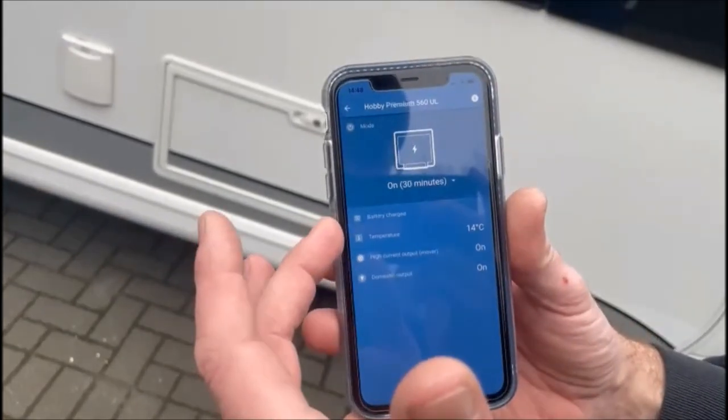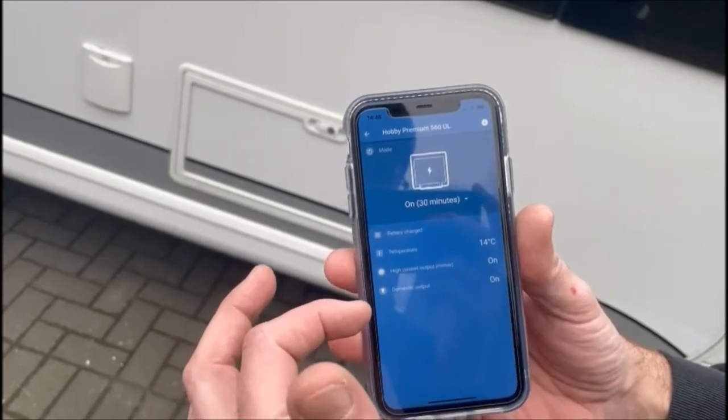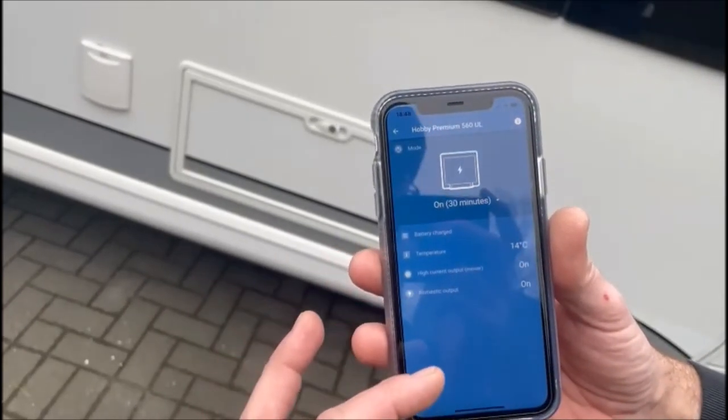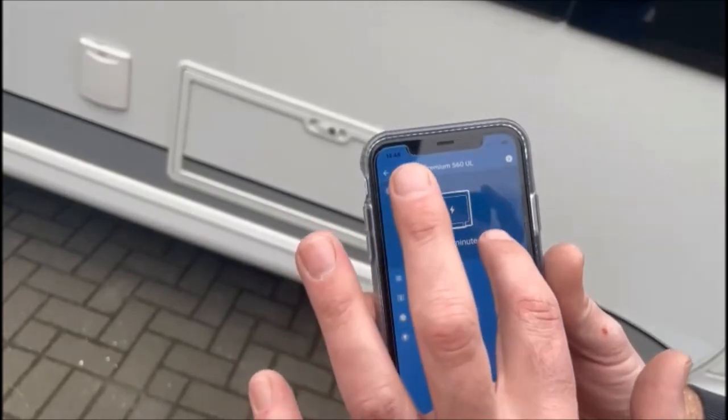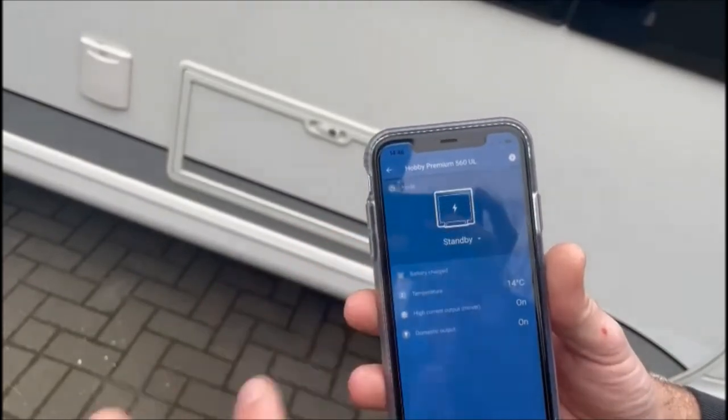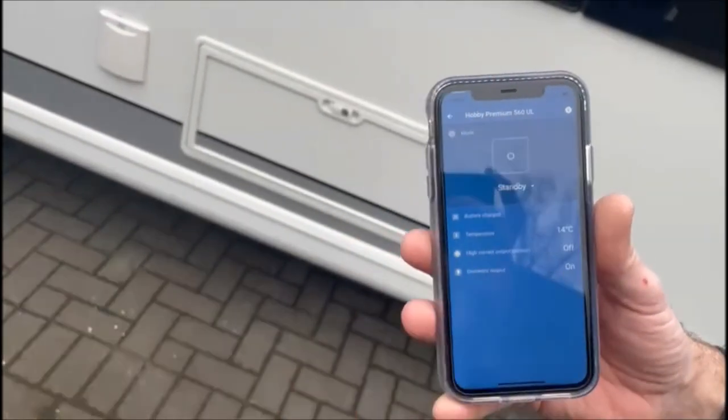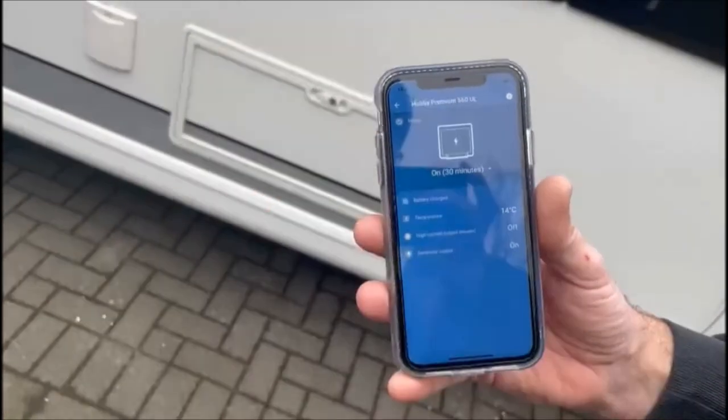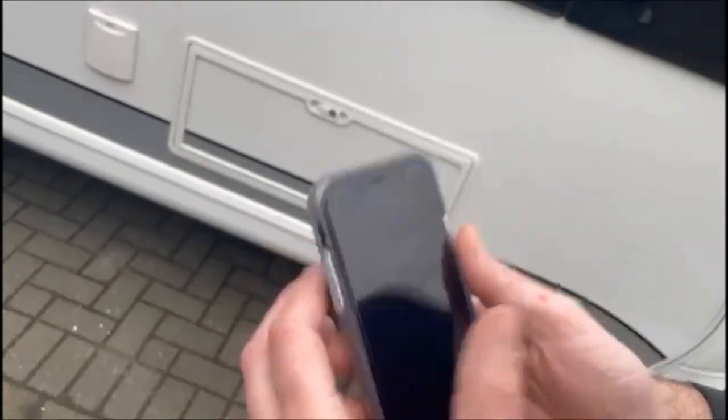As we've said, the power pack can be controlled by manual switch, but we've got the option of Bluetooth. So I've already set this up—took about literally two minutes to get this done. You could change the name however you want to do it. You tap the button. That tells you that the battery is charged, the temperature of the battery, and which of the two power sources is on. Now the domestic output is always on. We clearly want the one for the mover, which is currently on.